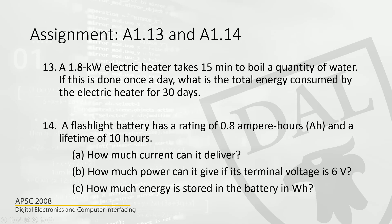A flashlight battery has a rating of 0.8 ampere hours and a lifetime of 10 hours. How much current can it deliver? Ampere hours divided by hours gives amperes — that is the current. How much power can it give if the terminal voltage is 6 volts? Power is voltage times current, so multiply those together. How much energy is stored in the battery in watt hours? You have the power in watts and 10 hours, so multiply to get watt hours.